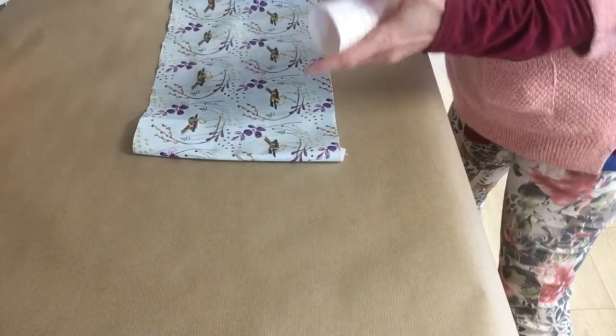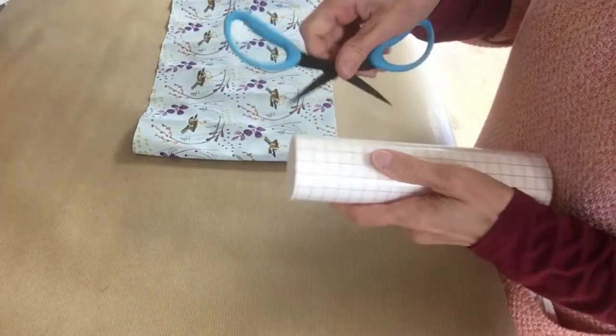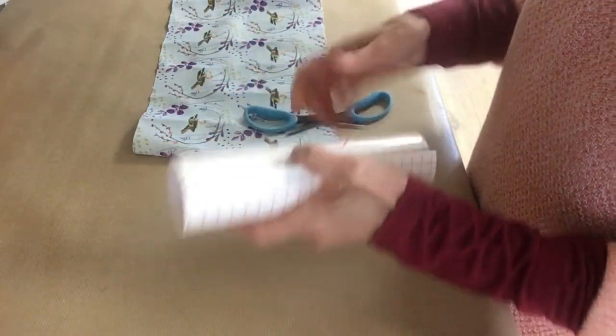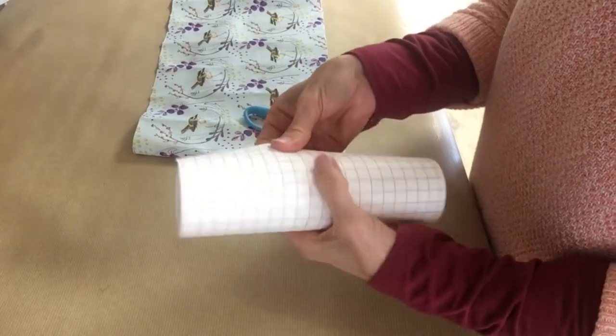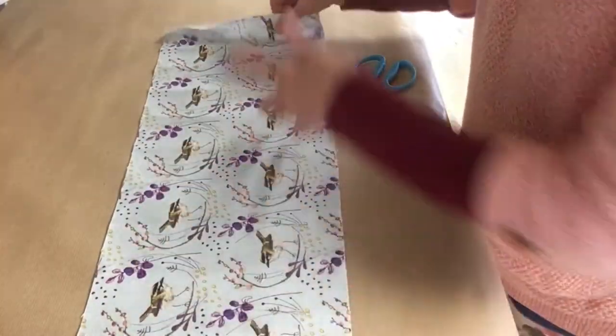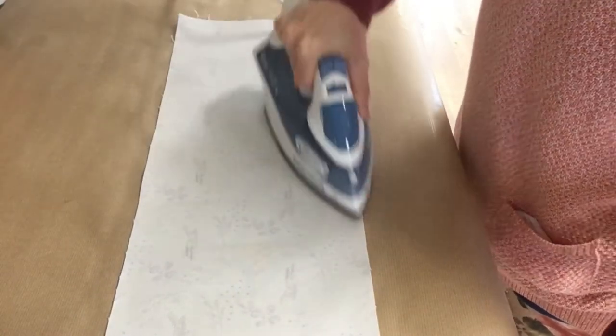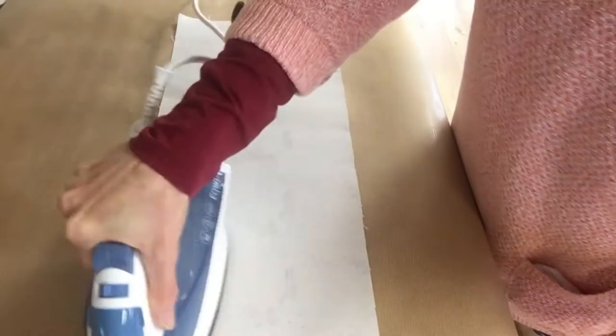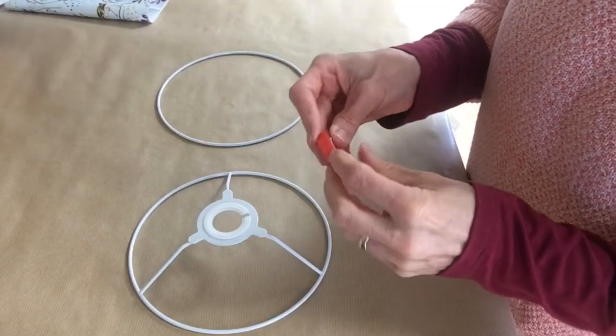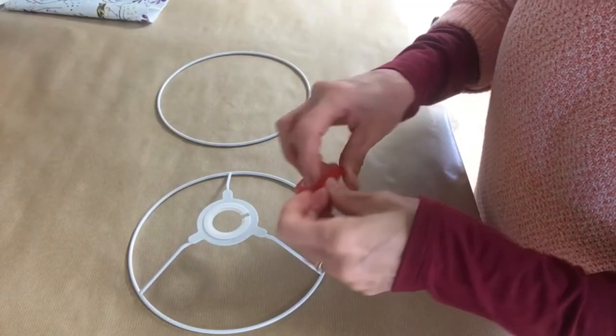I'm going to put the rings to one side at the moment. We're going to open the backing, the PVC backing. It's a good idea to flatten it, put it under something just to straighten it out to stop it kinking up.